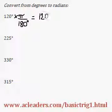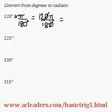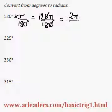We get 120 pi over 180. The degrees have already cancelled out. 12 over 18 is 2 over 3, so that's equivalent to 2 pi over 3.